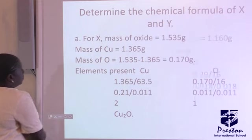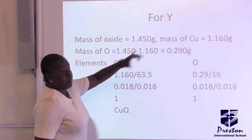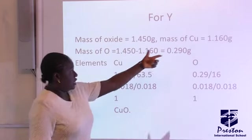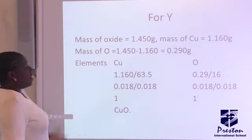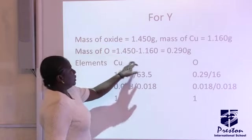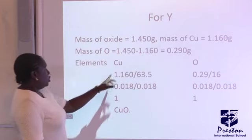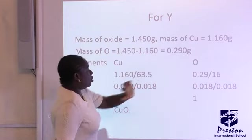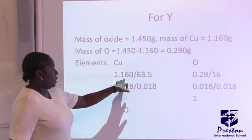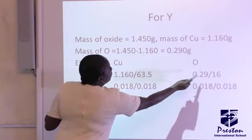Let's look at Y. For Y, the mass of the oxide from the question is 1.450, mass of copper is 1.160. So, how do you get your mass of oxygen? You deduct this from this, and you're going to have 0.290 grams. So, the same step, you list the elements copper and oxygen. The mass of copper from the question is 1.160, and the mass of oxygen from the calculation is 0.290.